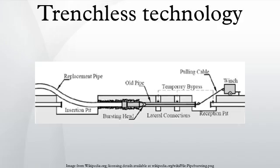Trenchless construction includes such construction methods as tunneling, microtunneling, horizontal directional drilling also known as directional boring, pipe ramming, pipe jacking, moling, horizontal auger boring, and other methods for the installation of pipelines and cables below the ground with minimal excavation.